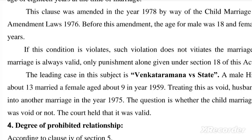The leading case on this subject is Venkataramana vs. State. A male Hindu aged about 13 married a female aged about 9 in the year 1959. Treating this as void, he entered into another marriage in the year 1975. The question was whether the child marriage of 1959 is void or not. The court held that it was valid.